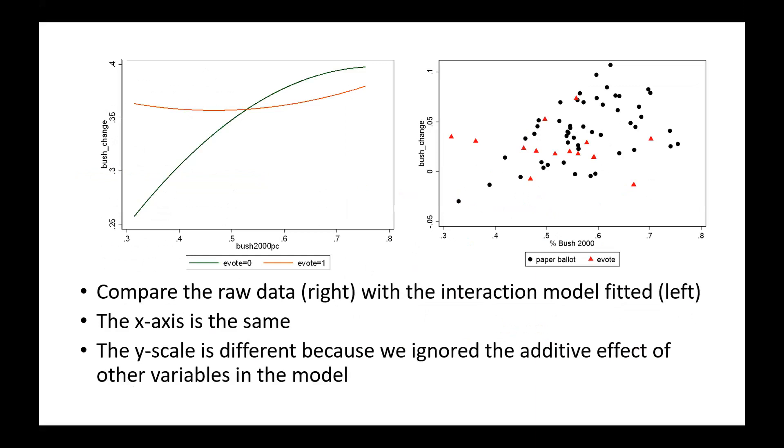If I put them side by side and ignore the scale because I took out the intercept and everything. Here, I have a zero slope, more or less, and an increasing slope. A zero slope, more or less, and an increasing slope. I see the exact same picture.